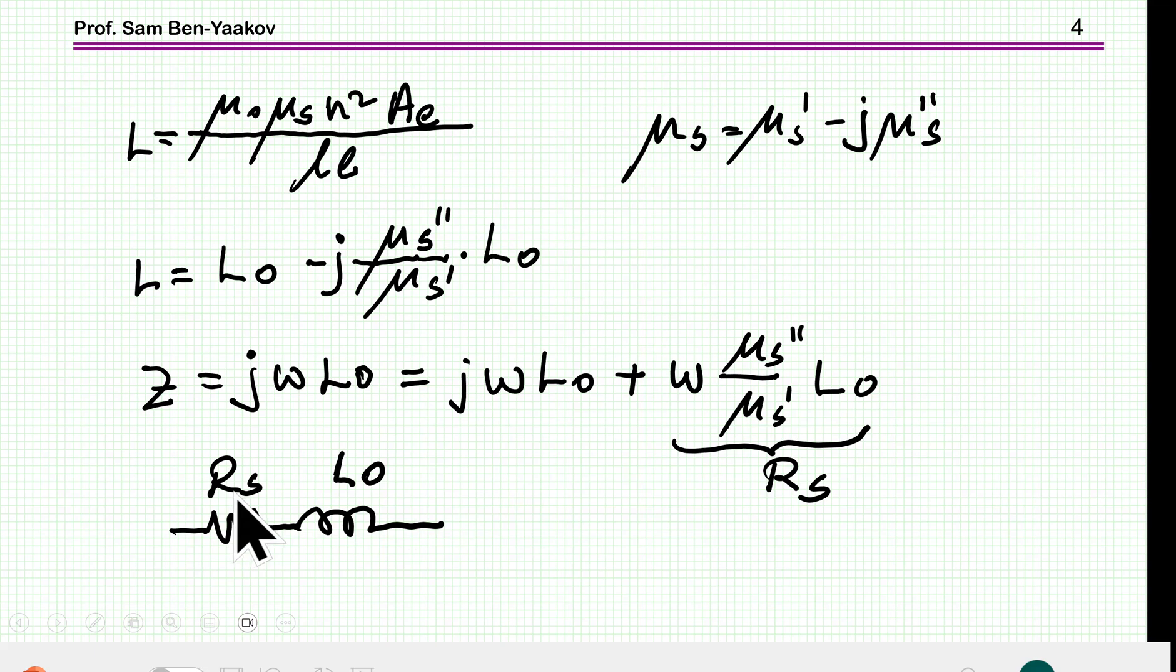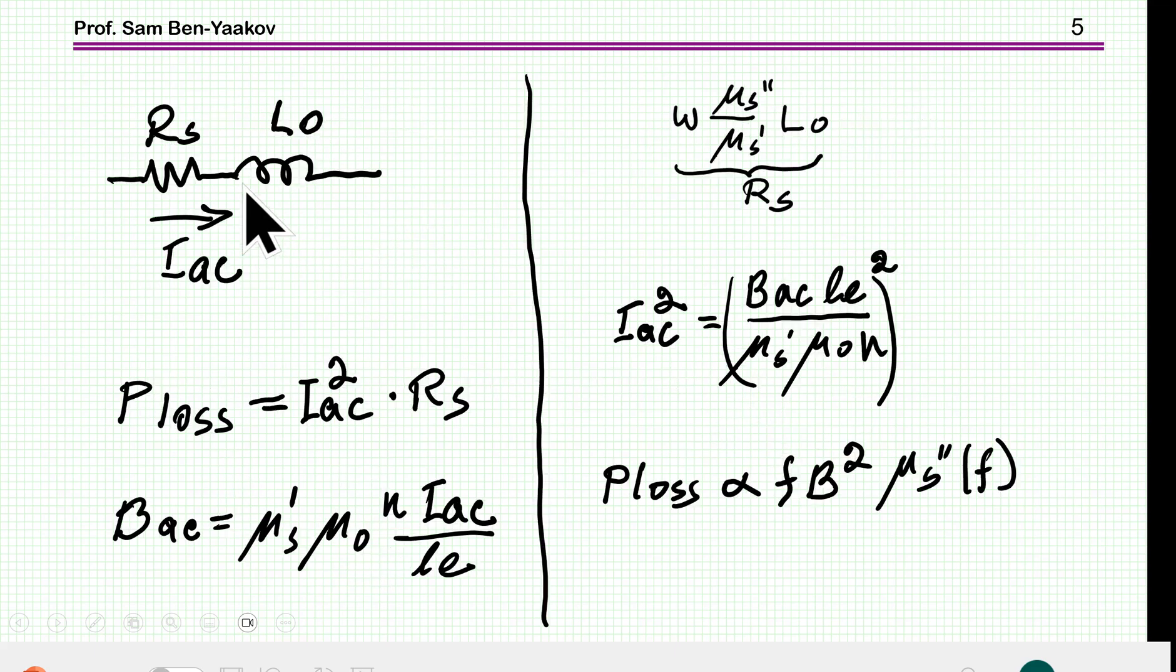So, in this presentation or modeling approach, the losses are due to a series resistor with the pure inductor. Now, this model is, of course, correct for AC voltages and currents, because at DC, there are no losses. Omega equal to zero, so the resistance is zero. So this is an AC model compatible with phasor calculation.